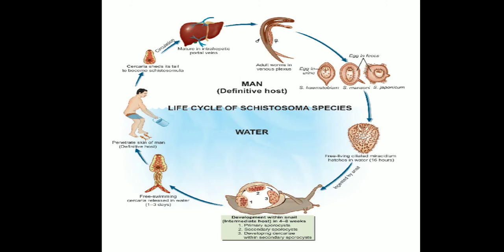Large numbers of cercariae are produced by asexual reproduction within the second generation sporocysts. The cercaria has an elongated ovoid body and a forked tail, also called a furcocercous cercaria. The cercariae escape from the snail and swarm in water for about one to three days. If during that period they come into contact with persons bathing or wading in the water, they penetrate through unbroken skin, facilitated by lytic substances secreted by penetration glands present in the cercaria.